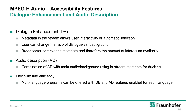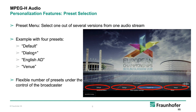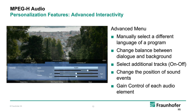Here's an example from the European Athletics Championships last year. We created a number of presets the viewer could select: the default, which is the normal as-broadcast sound; a Dialogue Plus, with dialogue boosted and other sounds attenuated; English audio description; and Venue Sound, which had no speech at all and just allowed you to enjoy the sense of being in the stadium. The broadcaster controls the number of presets and the labels given, and they can be changed at any time during broadcast.